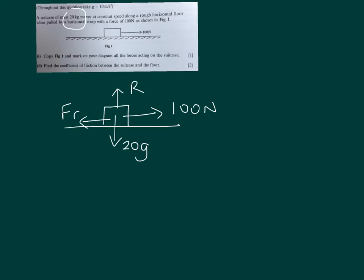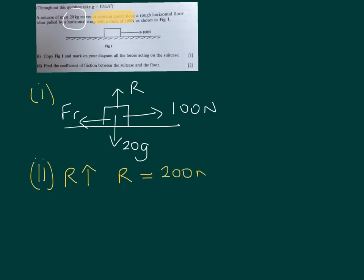We have to find the coefficient of friction in part 2. Now you'll notice that in the question it says it's moving at a constant speed, so therefore there's no acceleration and the forces are balanced. So as always we'll resolve in our two directions. The normal reaction is the only upward force and that will be balanced by the 20G or 200 newtons downward. And then resolving horizontally, again the forces are balanced because there's a constant speed, no acceleration, and so 100 to the right will be equal to the friction to the left.